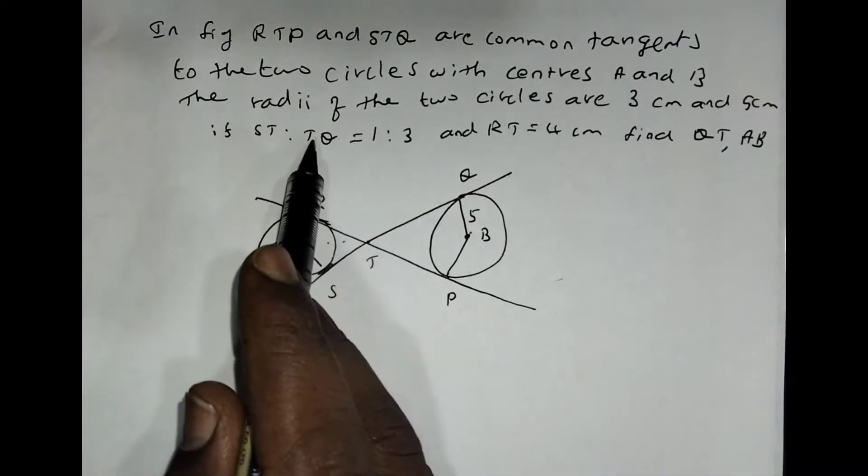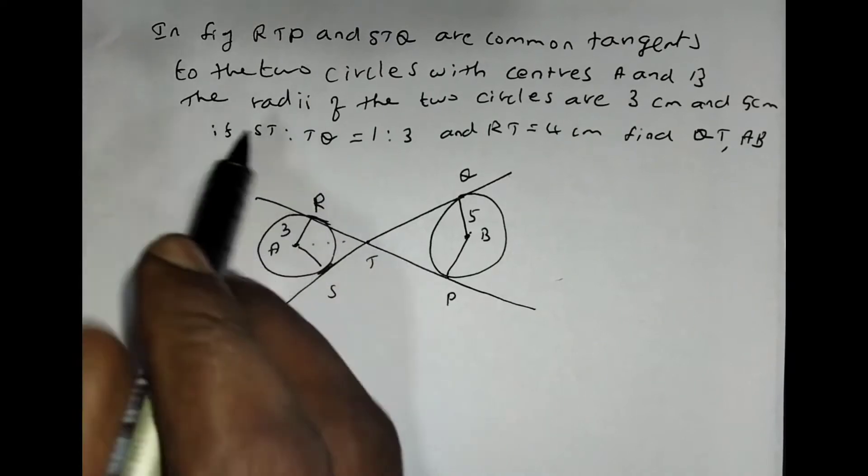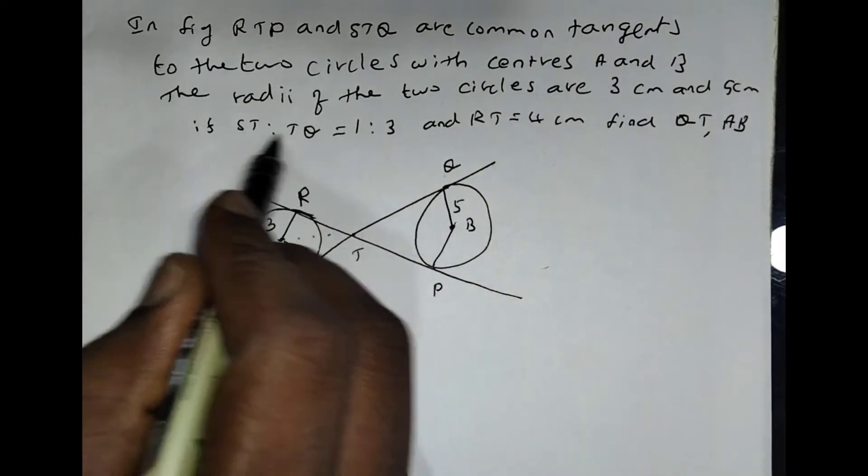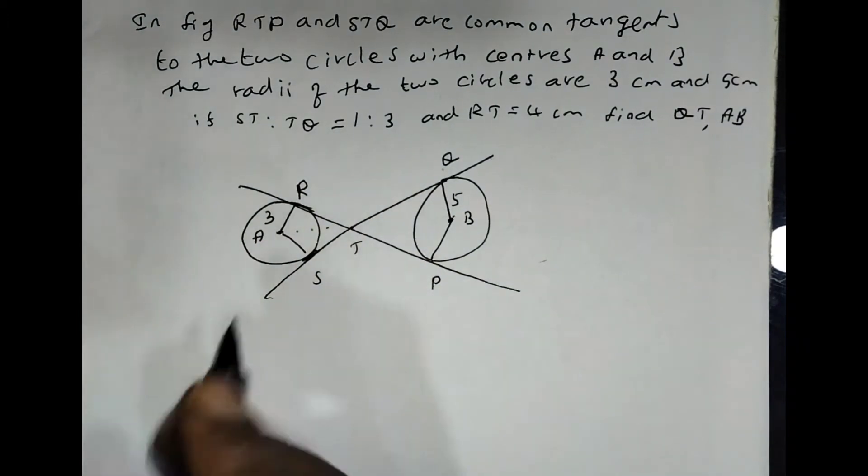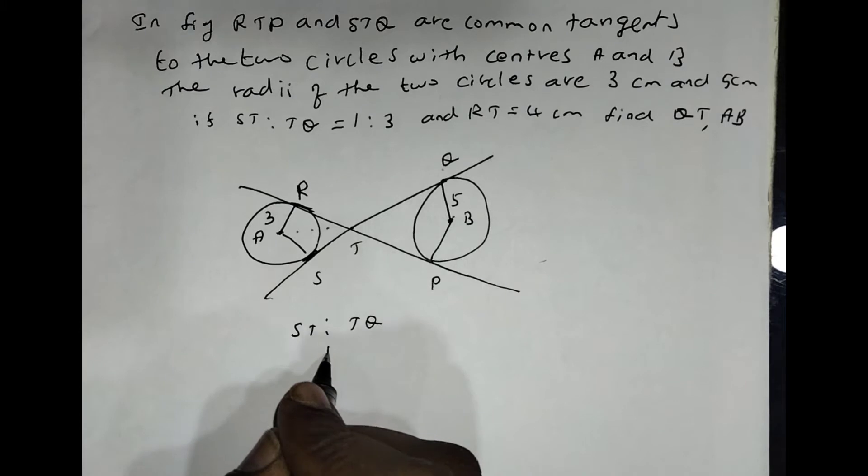They are given the ratio ST to TQ equals 1 is to 3. So the ratio of ST to TQ is 1 to 3.